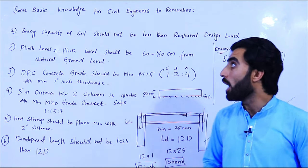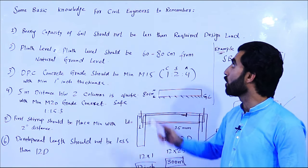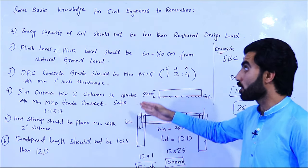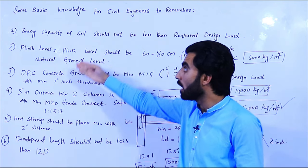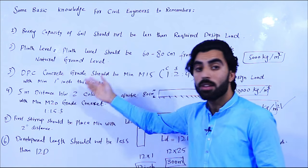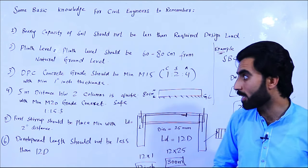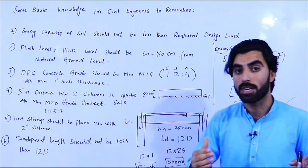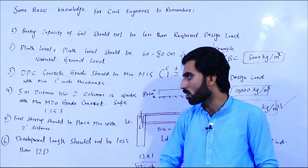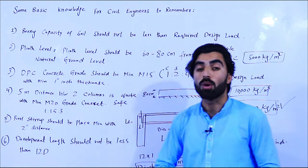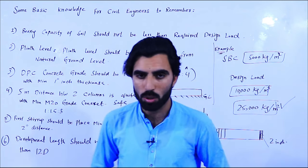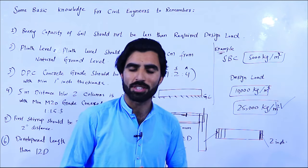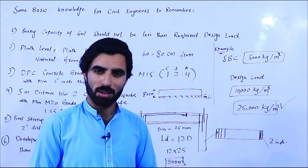So guys, these are some important and basic knowledge points for civil engineers which I have discussed. To summarize: bearing capacity of soil, plinth level, DPC thickness and concrete grade, safe distance between two RCC columns, first stirrup placement, and development length. If you have any questions about this video, please comment and I will try to reply. Thanks for watching, see you in the next video, goodbye.